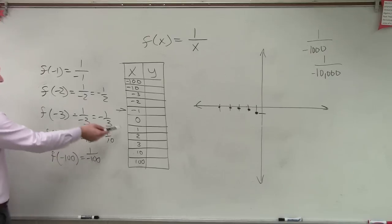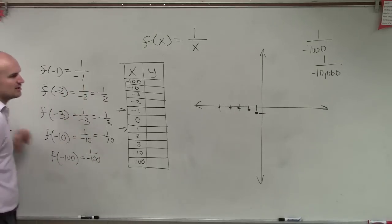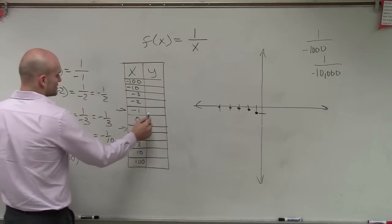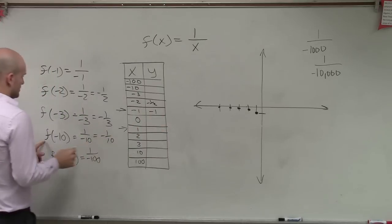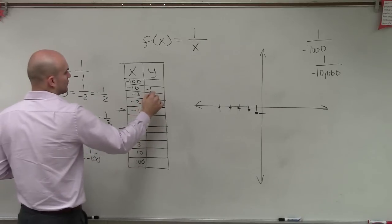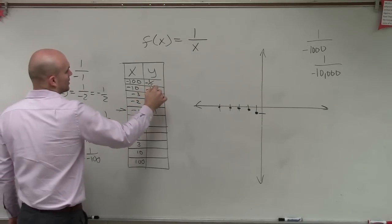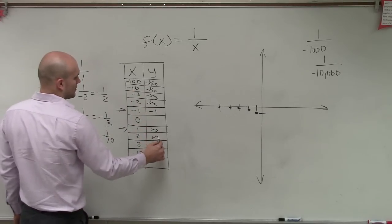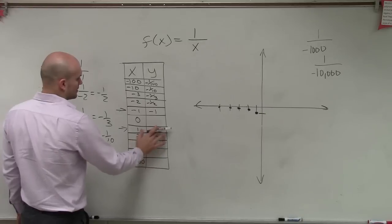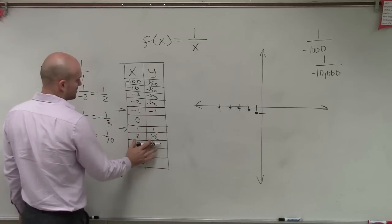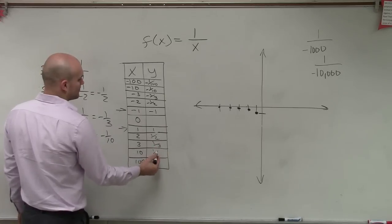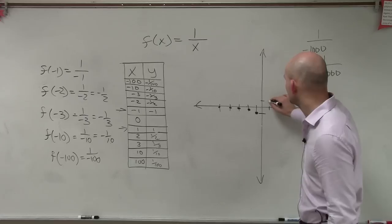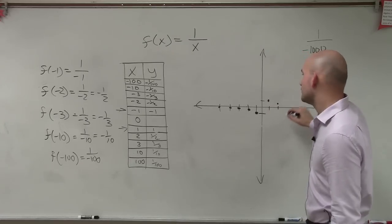Now let's look at f of 1 — we notice it's going to be the same thing, just positive: positive 1. So plugging in the positive values: negative 1 gives negative 1, negative 2 gives negative 1 half, negative 3 gives negative 1 third, negative 10 gives negative 1 tenth, and negative 100 gives negative 1 over 100. For the positive values we get positive 1 half, 1 third, 1 tenth, and 1 hundredth.